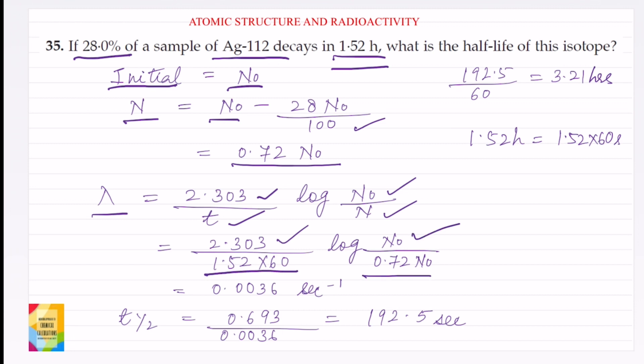So time is 1.52 into 60 seconds, log N0 divided by 0.72 into N0. The value of lambda will be 0.0036 per second. Now t half, the formula is 0.693 divided by decay constant that is lambda.